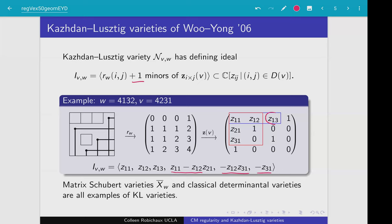You might worry that you'd have to take all possible southeast corners and all these minors, but due to a result of Fulton, these minors are enough to generate the defining ideal. Those corners are precisely the essential set of the Rothe diagram of W — positions in your Rothe diagram where you don't have any boxes south and you don't have any boxes east — exactly corresponding to the two corners we chose.